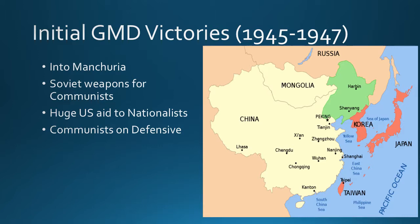In the first part of the war, the communists were on the defensive due to the nationalists' advantages in weapons and troop numbers. The nationalists established a decent presence in Manchuria while on the offensive. However, they lost support in Manchuria for very familiar reasons: they were not willing to institute land reform, not willing to work with the peasants, and their leadership appeared weak — leading to a loss of popular support.